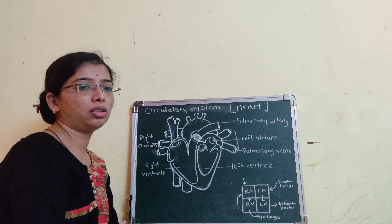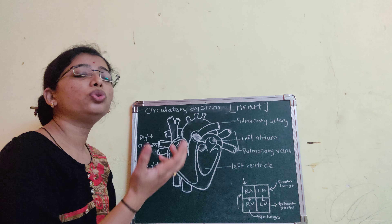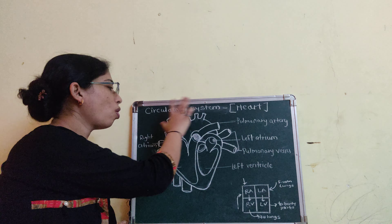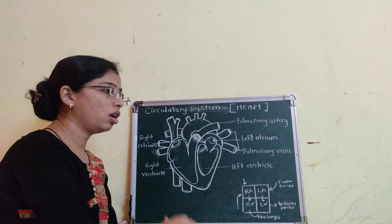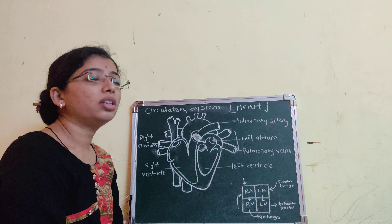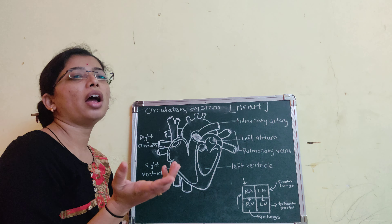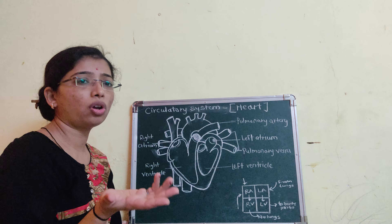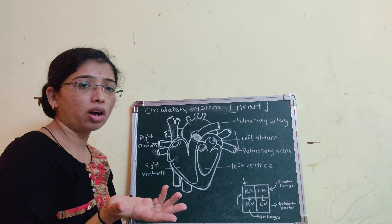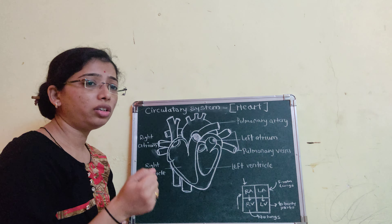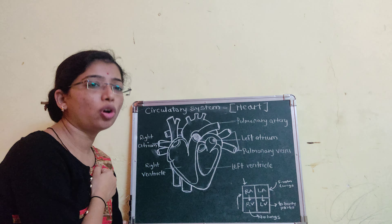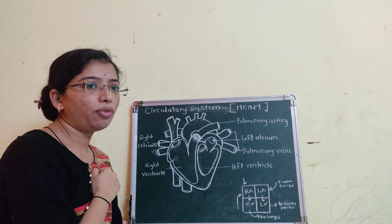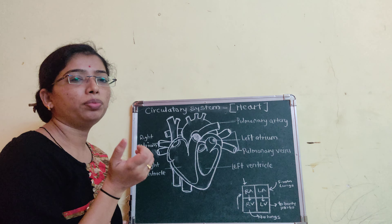The size of the heart is just like your fist. The outer covering of the heart is made up of the pericardium membrane. The pericardium membrane is a double-layer structure, and the function of the pericardium membrane is the protection of the heart.